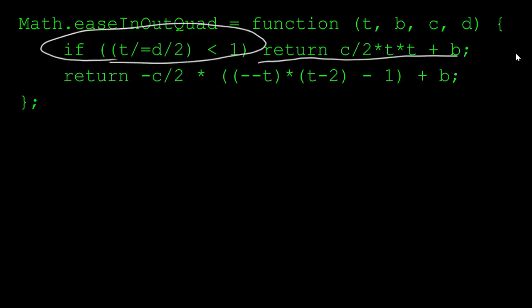If it's true, we return the result of one expression. And if it's false, we jump out and return the result of another expression. Essentially, this is doing two different eases. If we're in the first half of the tween, it does ease in. If we're in the second half of the tween, it does ease out.